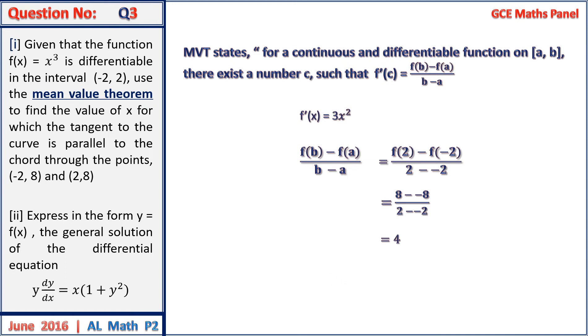Therefore, 3x squared equals 4, and x equals positive or negative 2 on root 3.